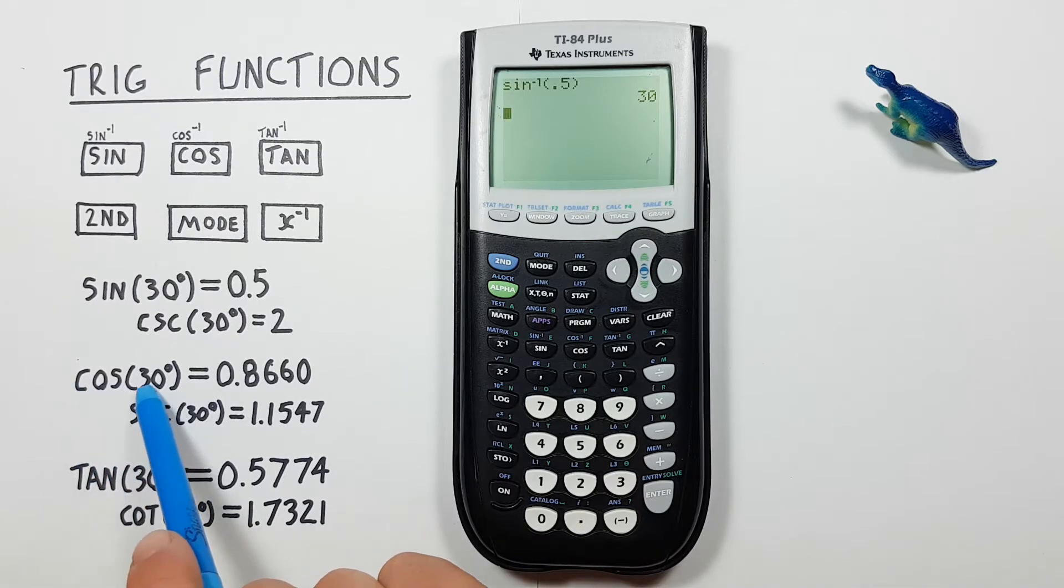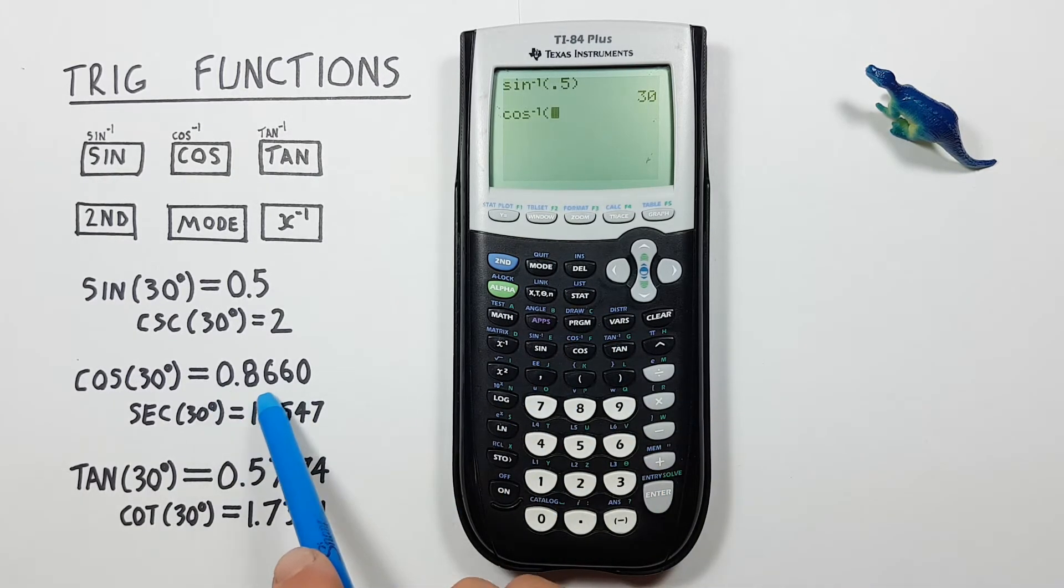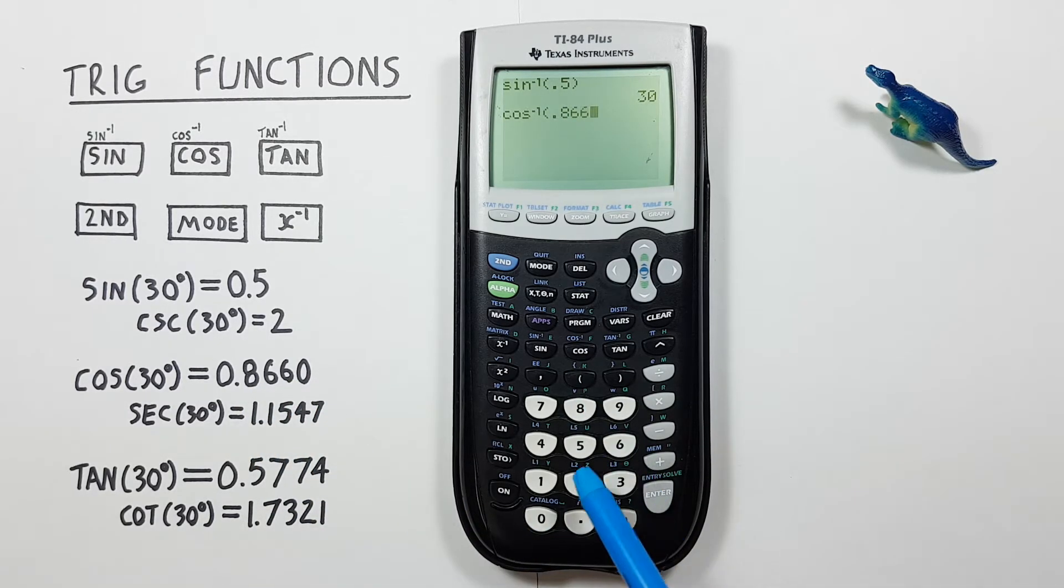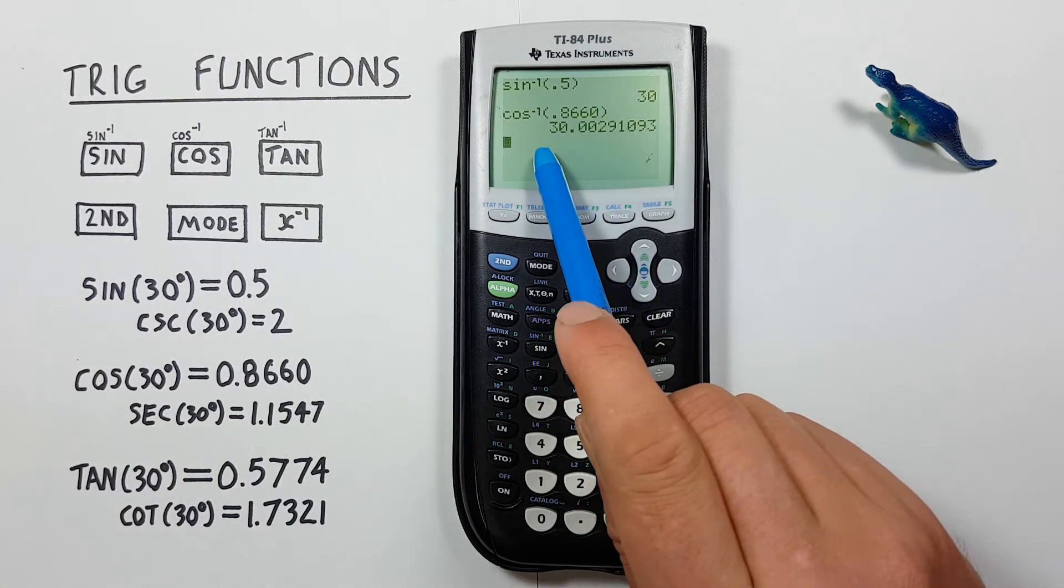Arc cos, or inverse cos, same thing. Second cos, and we'll enter a result from the last time of 0.8660, which we rounded. Close our bracket and enter, and we get a result that would round to 30 degrees.